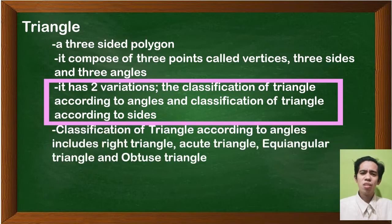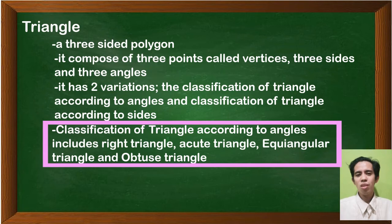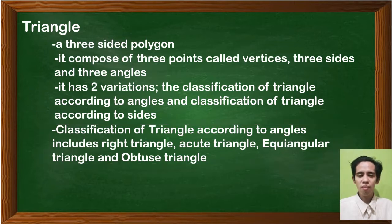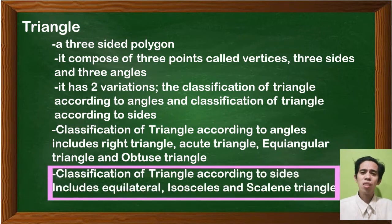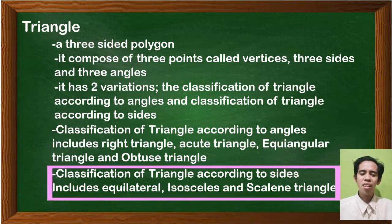For the classification of triangles according to angles, it includes the right triangle, the acute triangle, the equiangular triangle, and the obtuse triangle. For the classification according to sides, we have equilateral, isosceles, and scalene triangle.